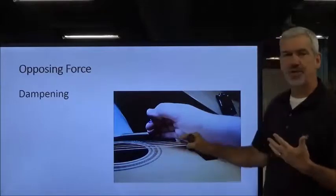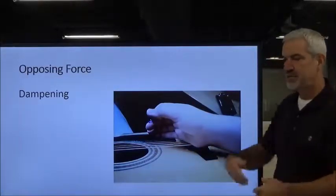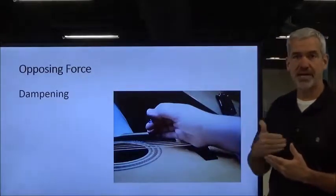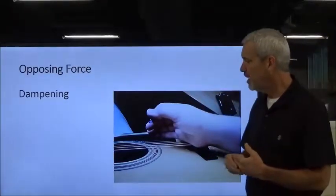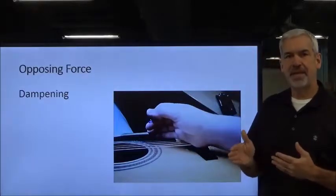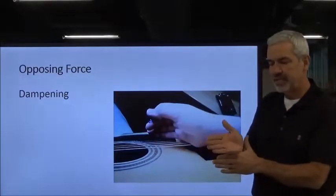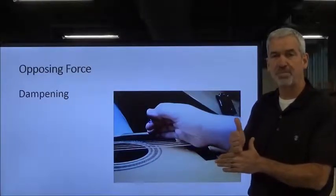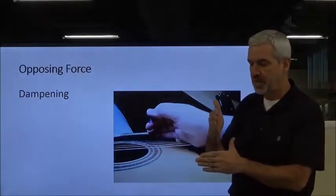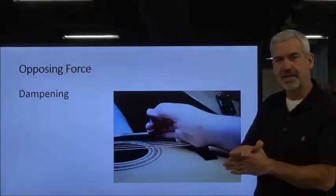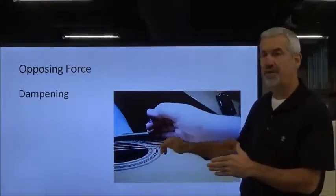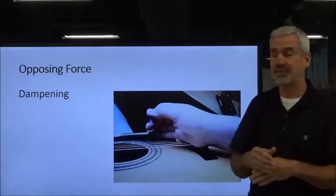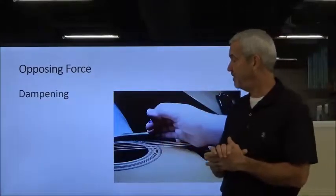The three forces that oppose the excitation force — we're going to go into each one. First, dampening. Using the guitar example again: once we strike that string and it's vibrating and putting off an audible sound, we can dampen it by simply laying our hand on it. We basically cause the string to stop its movement — we have dampened that vibrational force and the oscillation motion to the point where it finally stops. We no longer have vibration.